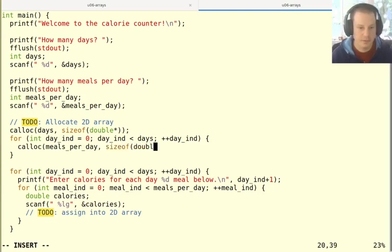And each inner array has meals per day. And each one of those things in the inner array is actually a double. So size of double. And then now let's think about what are the actual things that we're assigning to. So this is just calling calloc but then not saving it anywhere, it doesn't really make sense.